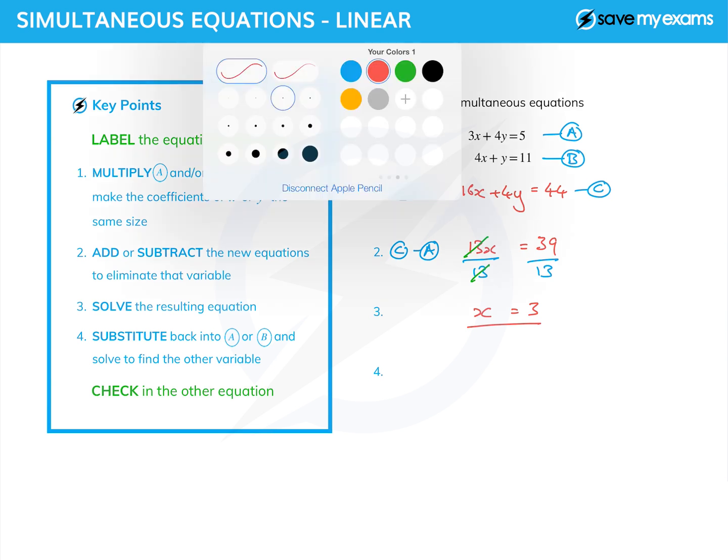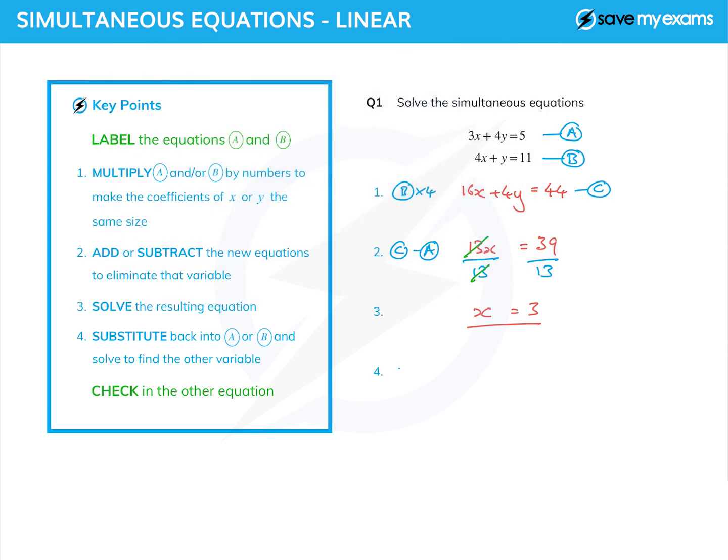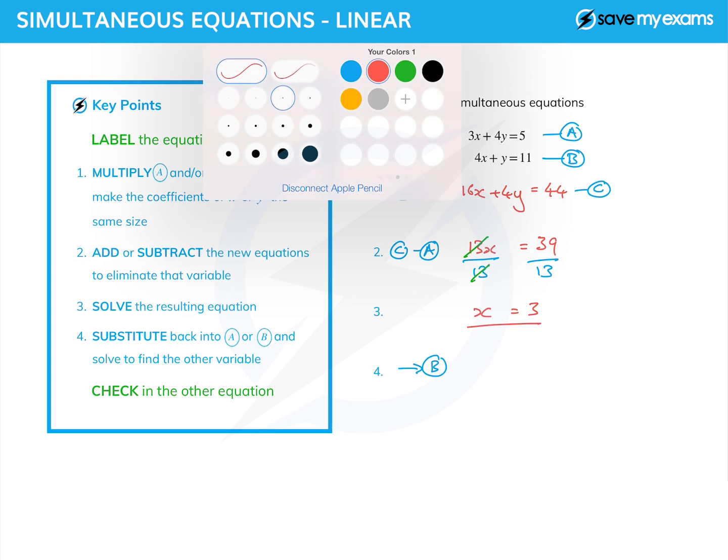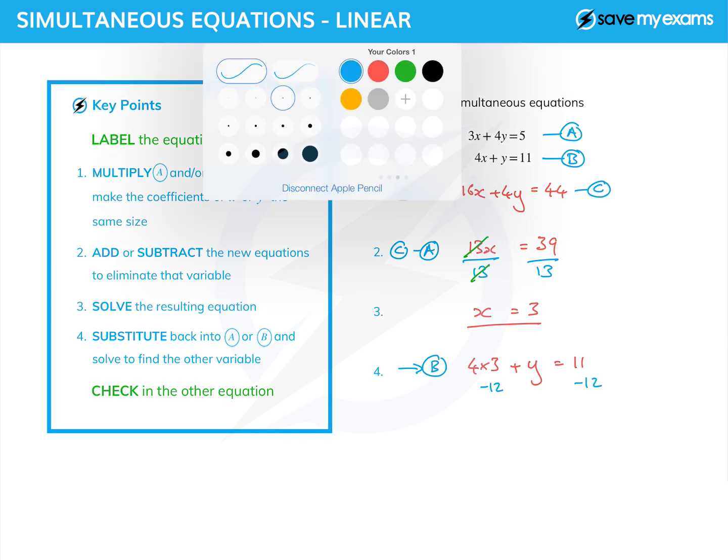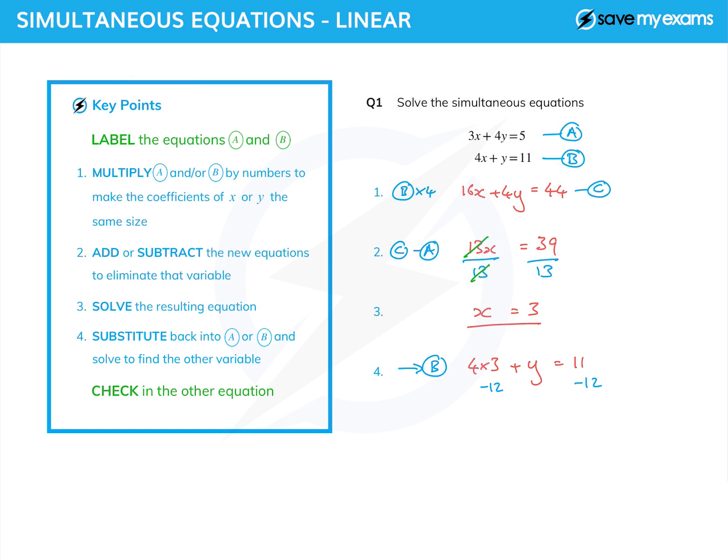I can now substitute that back into either of these equations. I'm actually going to substitute it back into B, because that would seem to be the easier equation. And that gives me 4 times 3, which is 12, is it not? Plus y equals 11. And to solve that equation, I simply subtract the 12 from both sides. Sometimes it'll be a little more hard work, but not this time. And that gives me y equals minus 1. So there are my two answers. x equals 3 and y equals minus 1.